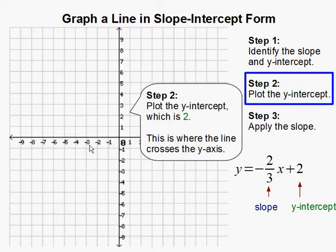Step 2. The first thing is to plot the y-intercept, which is 2. And this is where the line crosses the y-axis. So the y-axis is right here. And 2, our y-intercept, is our first plot, and we plot that on 2 of the y-axis.